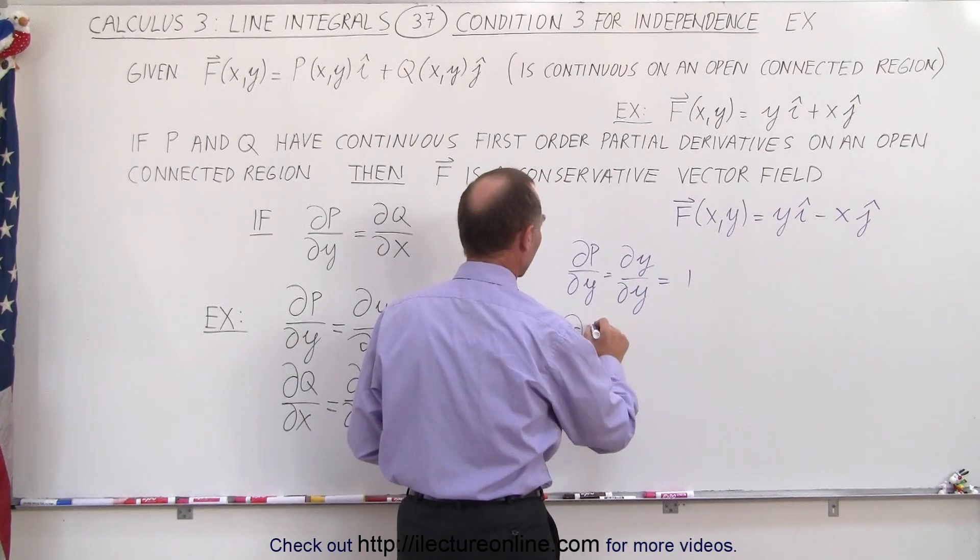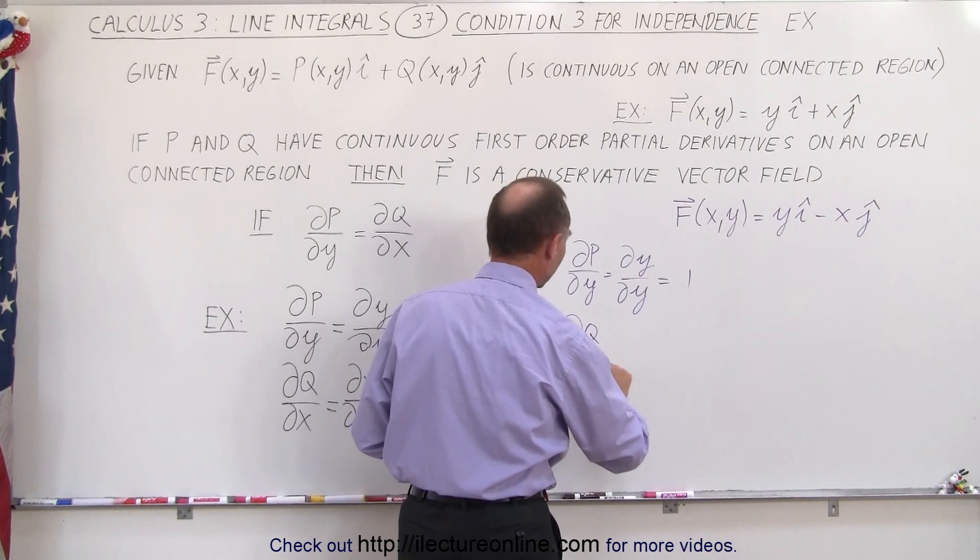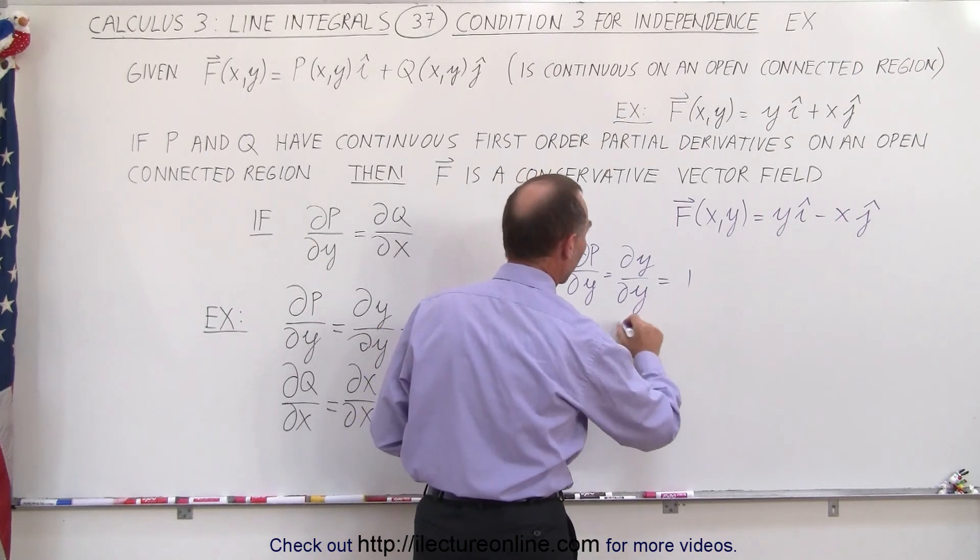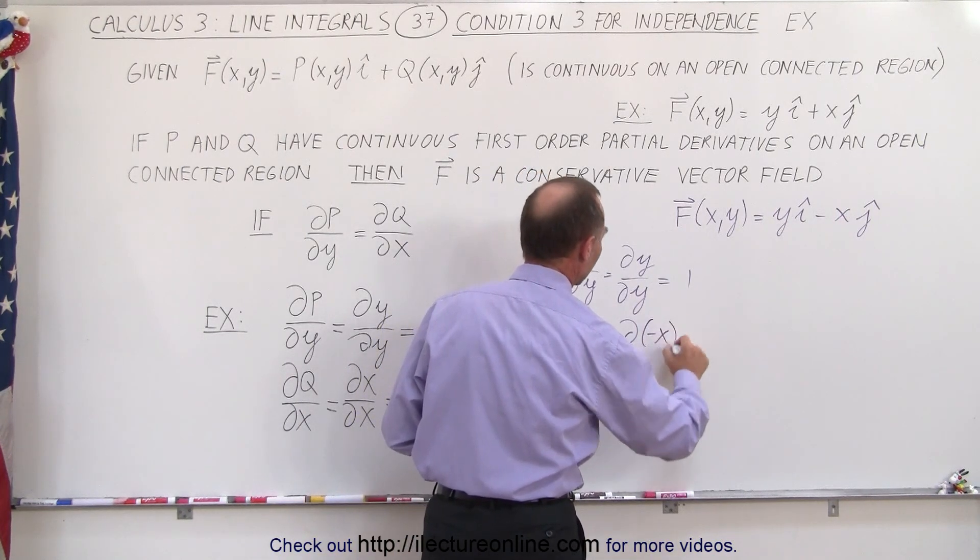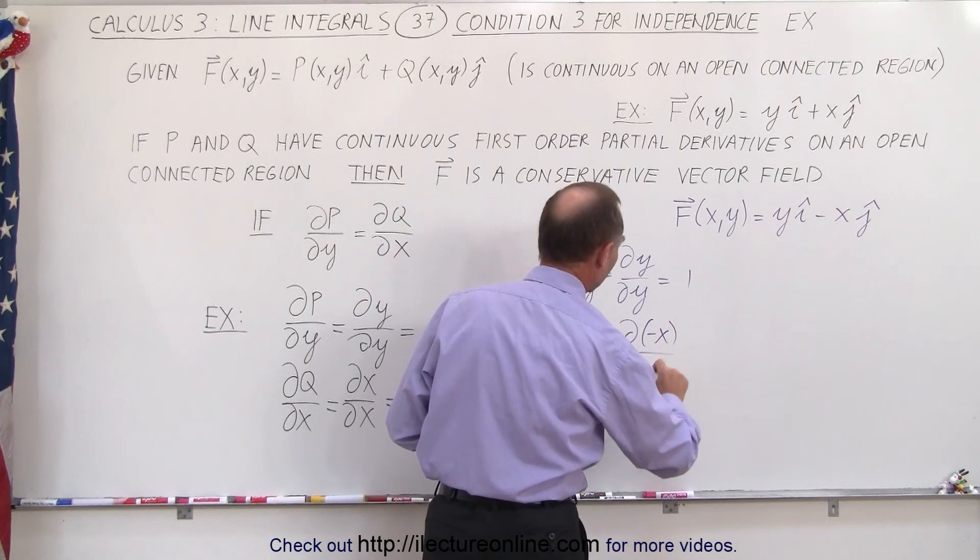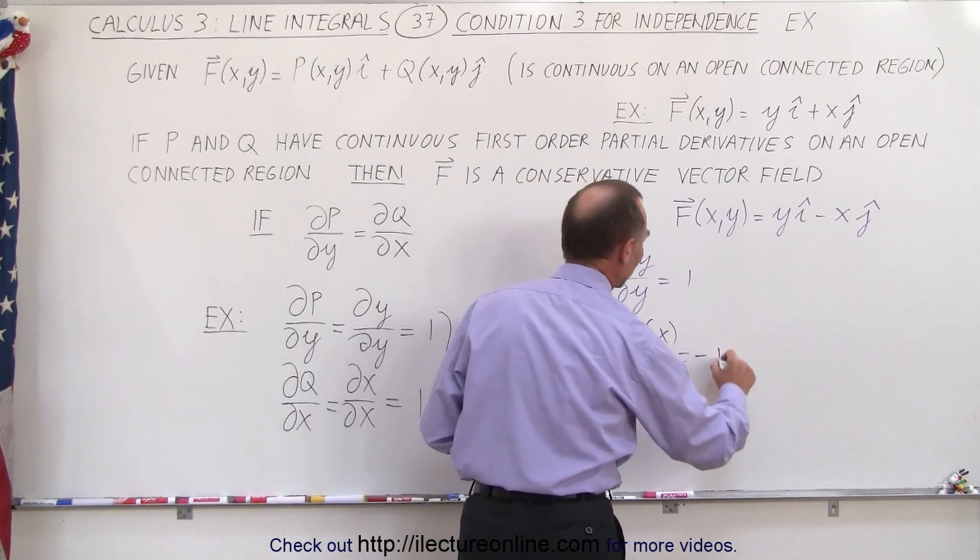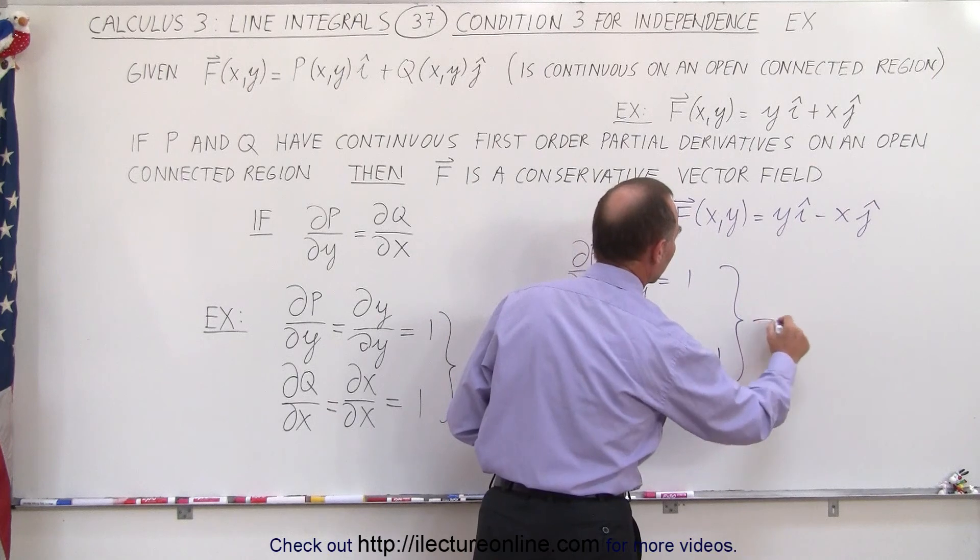And the partial of Q with respect to X, which in this case is going to be the partial of minus X with respect to X, which is equal to minus 1. And notice when we compare the two results,